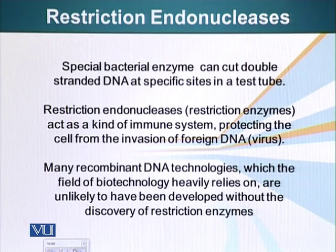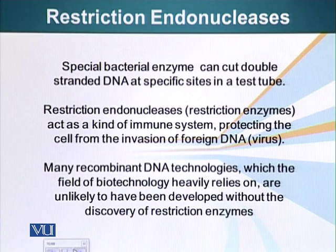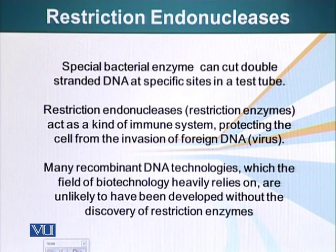That is why the phage that was initially able to infect E. coli B very successfully could not infect E. coli K successfully — it was being degraded. Bacteria have a sort of immune system that detects foreign DNA and degrades it.